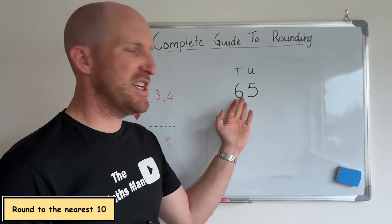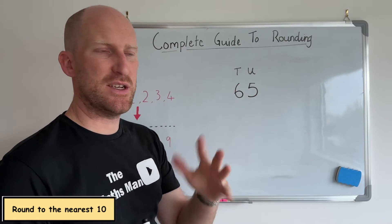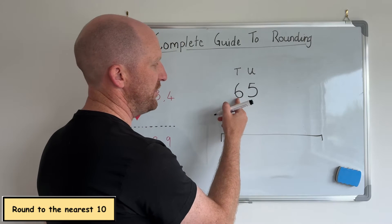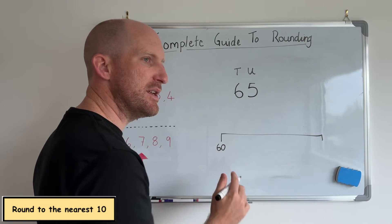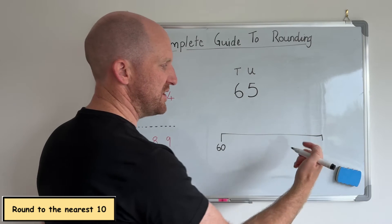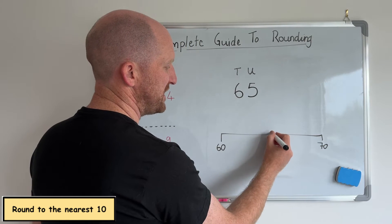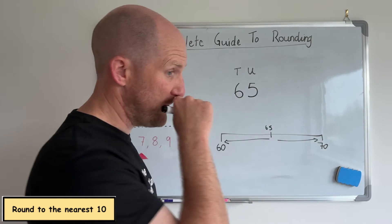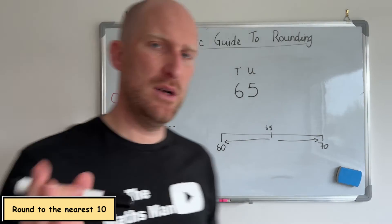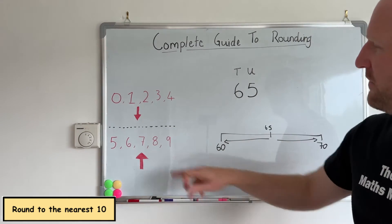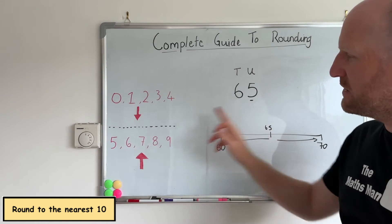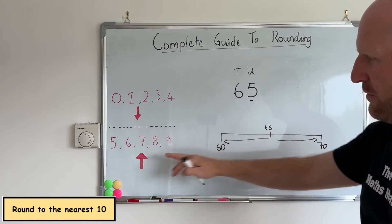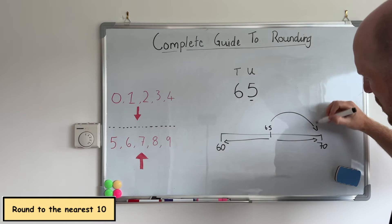In the next example we have 65. In the tens column we have a 6 which means 60, and a 5 in the units column. On a number line, 65 falls slap bang in the middle between 60 and 70 — it's just as close to 60 as it is to 70. But using the rule: if the unit is 5, 6, 7, 8, or 9, we must round up. So 65 would be rounded up to 70.